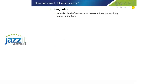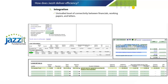Integration. Information is retrieved from caseware as well as shared between documents. This provides greater data integrity in your client files. For example, our loan amortization calculator provides annual interest and principal repayment information to the working paper, which shares this information with a note to the financial statements.